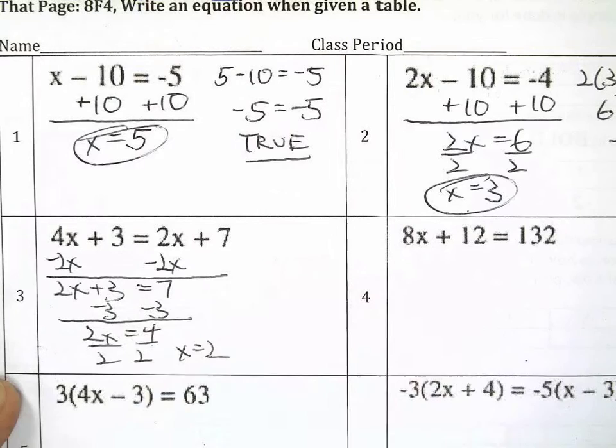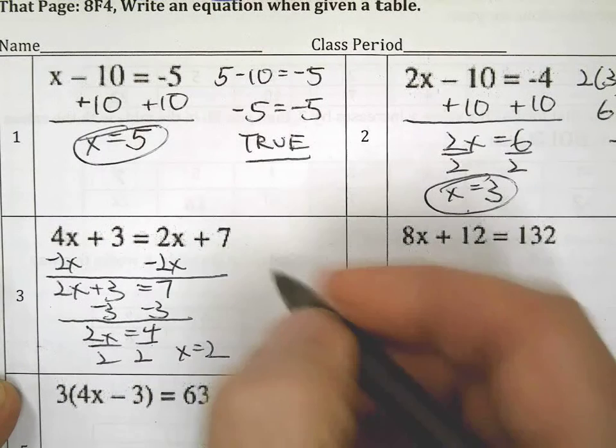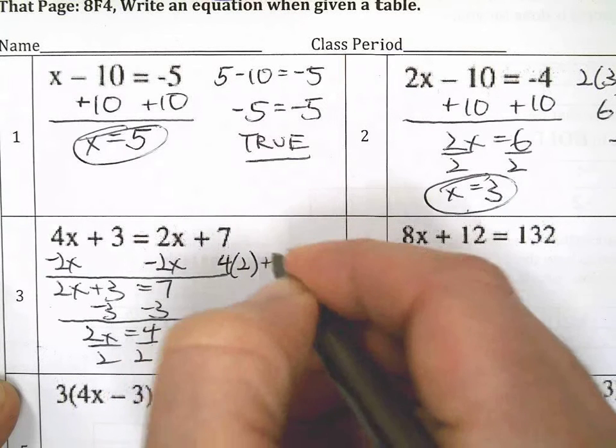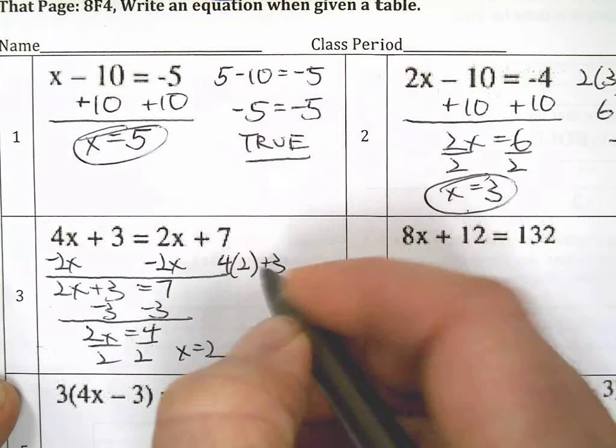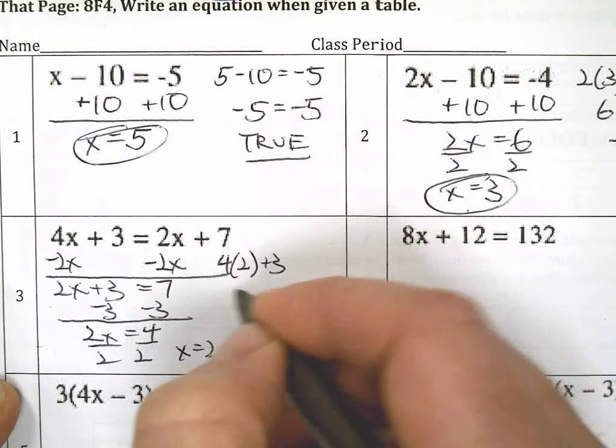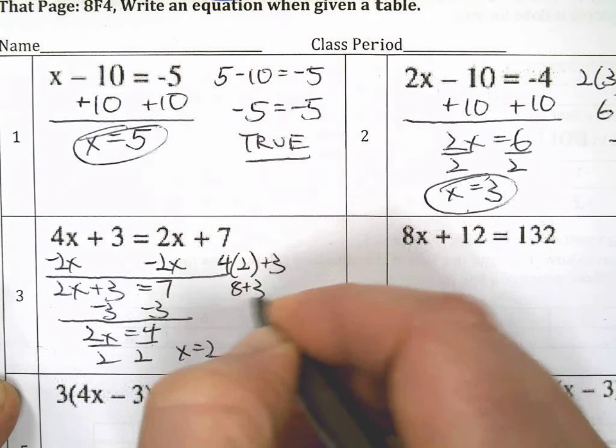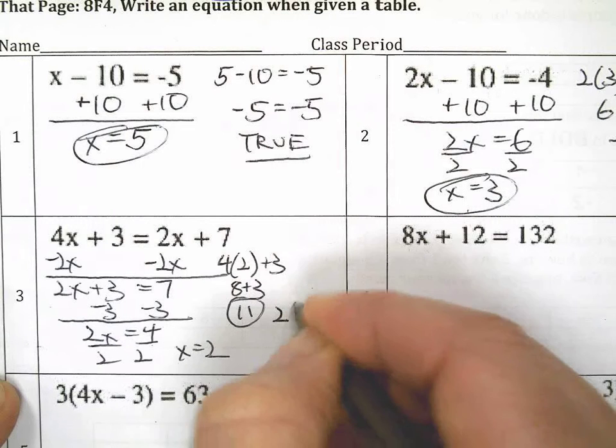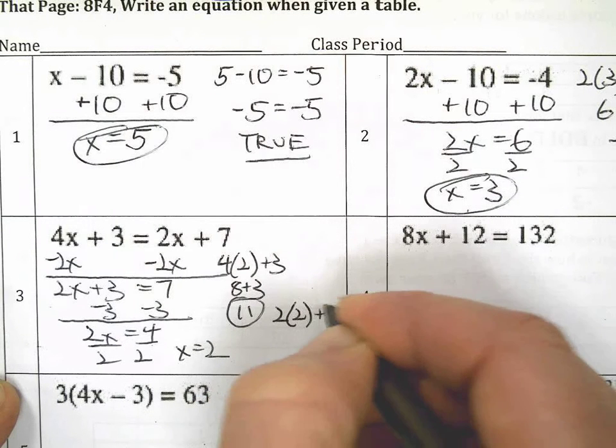x equals 2. I'm going to have to write tiny here, but I'm going to do my best. 4 times 2 plus 3, which is 11, right? 8 plus 3, which is 11. Now we're gonna do 2 times 2 plus 7. 11, right?